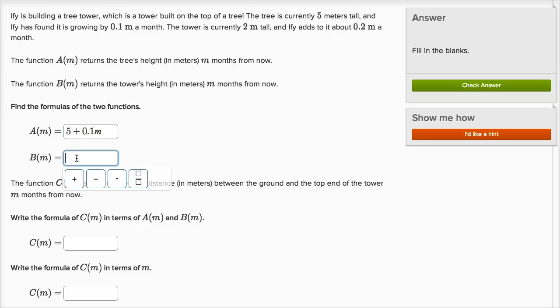Now let's think about the tower. So the formula for B of m. The tower is currently two meters tall, and it grows at two-tenths of a meter per month. So two-tenths times the number of months.